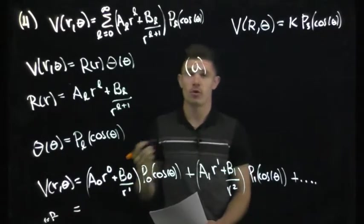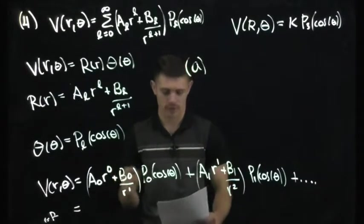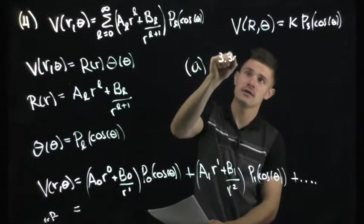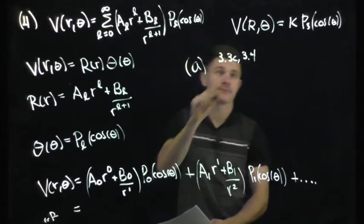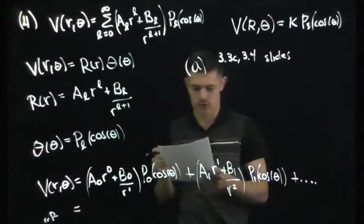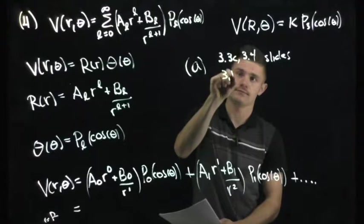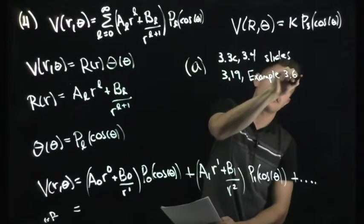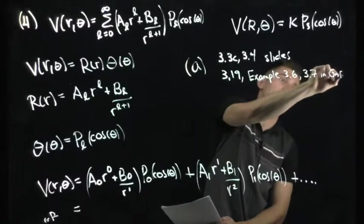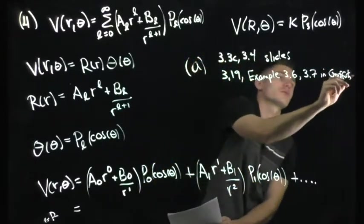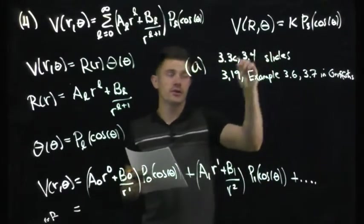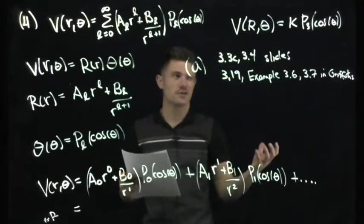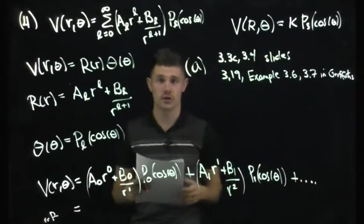That helps us with part A, which asks for the dipole moment of the sphere. Recalling from the multipole expansion — covered in sections 3.3C or 3.4 in the online notes on D2L, and also in Griffiths problem 3.19 and examples 3.6 and 3.7 — these are resources for more information on the multipole expansion and problems similar to part B.